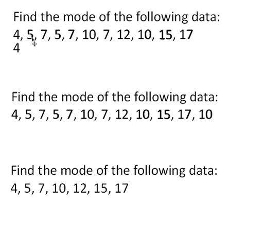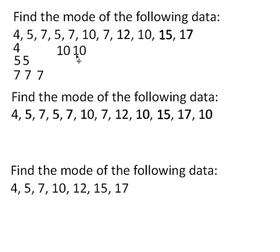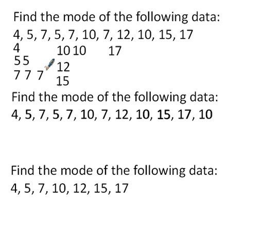So let's bring these out so that we can see exactly how many we've got of each number. We've got 1 four, 3 sevens, 2 tens, 1 twelve, 1 fifteen, and 1 seventeen. So the number that appeared the most — the mode — is 7.